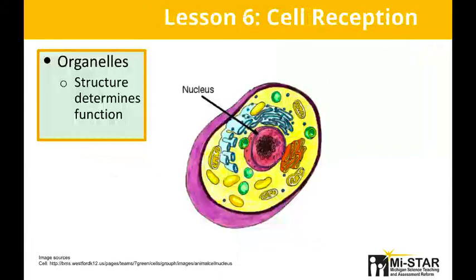In Lesson 6, students model how a healthy cell functions through the actions of its organelles. Organelles such as the nucleus, mitochondria, and cell membrane all have specific structures that enable the organelle to perform its function. All organelles must function properly in order for the cell to survive and function correctly.